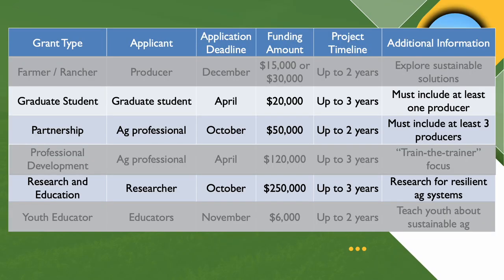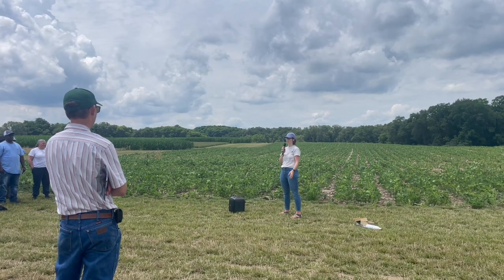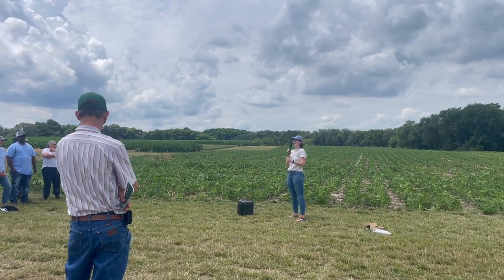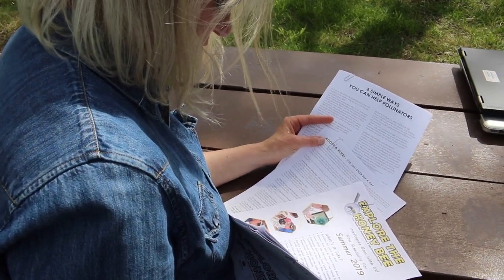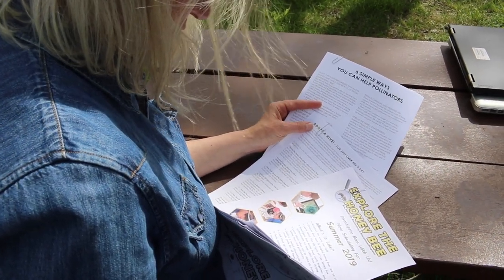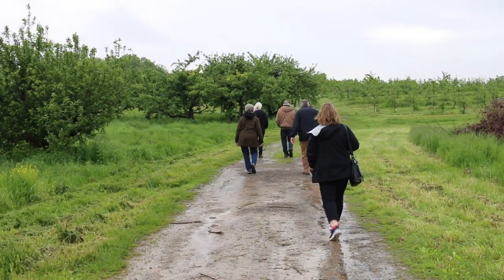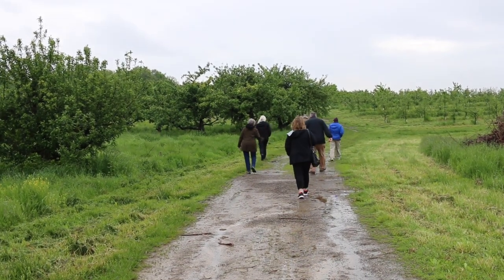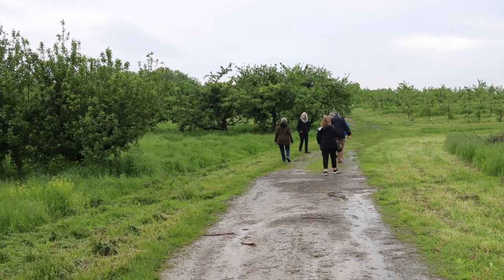For graduate student partnership and research and education grants, you're sharing out with those who can put what you learned to work. For instance, if you did on-farm applied research, you're going to share that with the end users, probably farmers. If you led an innovative education project, your outreach is in addition to the education work itself. You might focus your outreach on other agriculture professionals — folks who can utilize the resources or curriculum that you developed so that your work ripples out to reach more farmers.